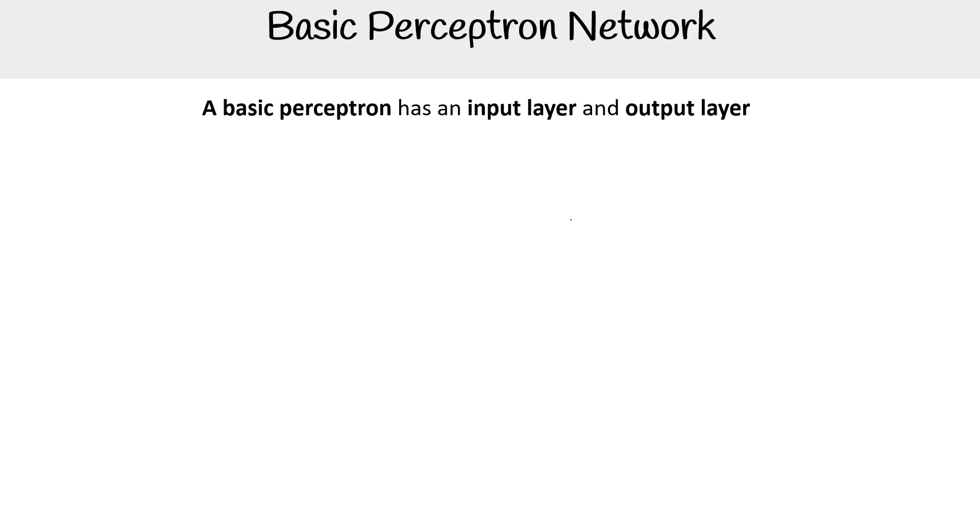So a basic perceptron has an input and output layer, each layer contains a number of nodes, nodes between layers have established connections that are weighted.